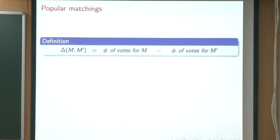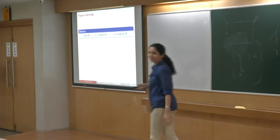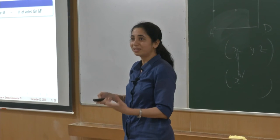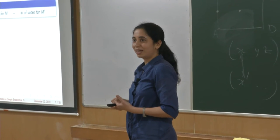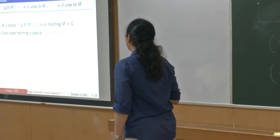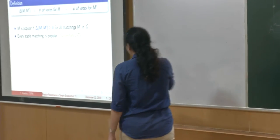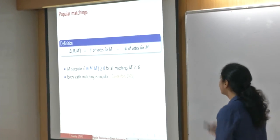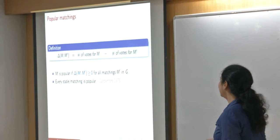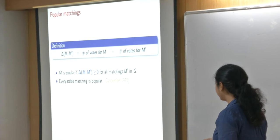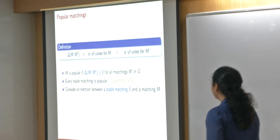Whether blue is popular or not, it's too early to say — you have to compare it against every matching and ensure it doesn't lose against any. The notion of popularity was introduced more than 40 years ago by Gardenfors, who observed that it's indeed a relaxation of stability: every stable matching is popular, and it's virtually a one-line proof.